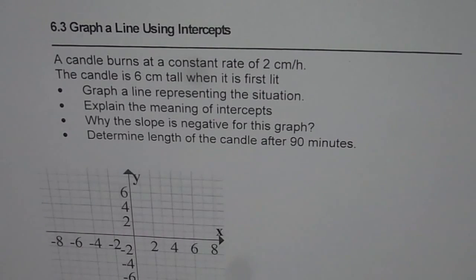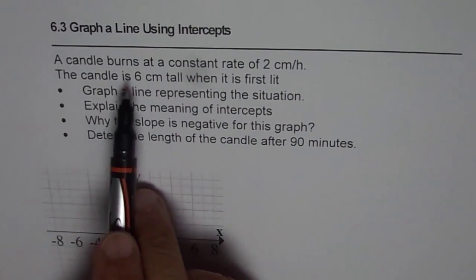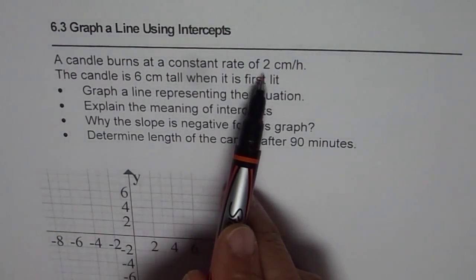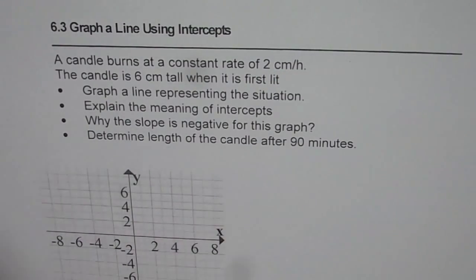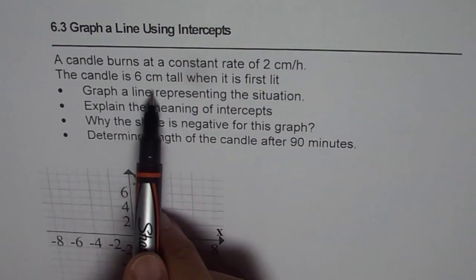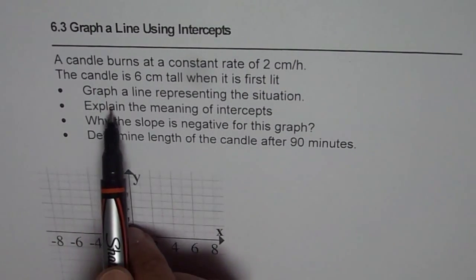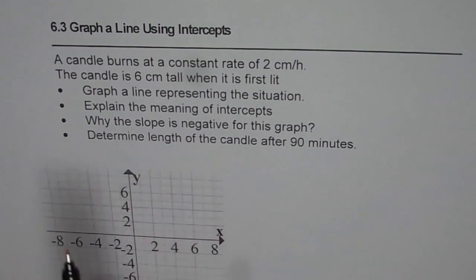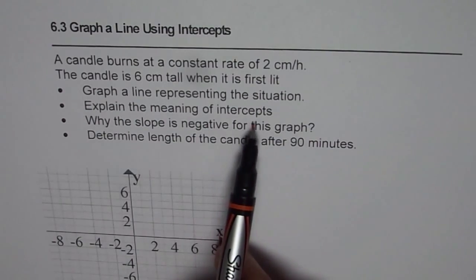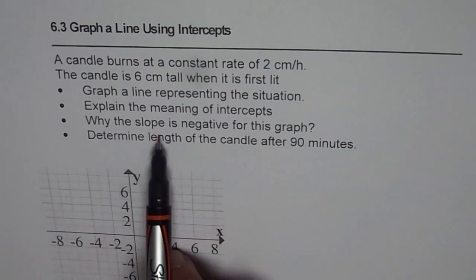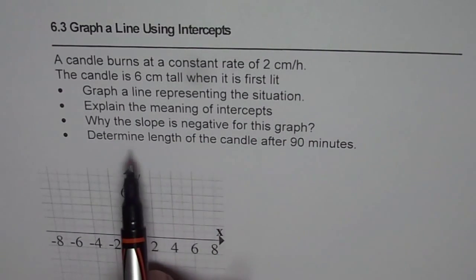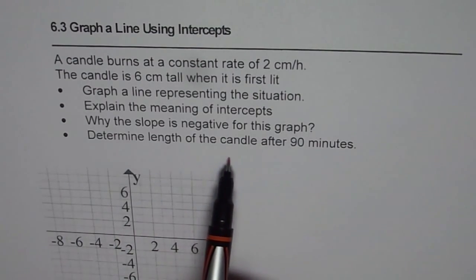I am Anil Kumar and in this example we will model a real-life situation. The question is, a candle burns at a constant rate of 2 cm per hour. The candle is 6 cm tall when it is first lit. Graph a line representing the situation, explain the meaning of intercepts, why the slope is negative for this graph, and determine length of the candle after 90 minutes.